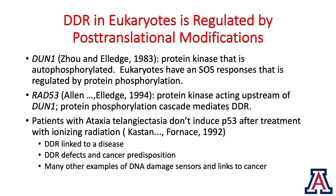Later on, Elledge went on to show that DUN1 is a protein kinase that's autophosphorylated, and that eukaryotes have SOS responses regulated by protein phosphorylation — so now we're talking about post-translational modification, not just transcription. Ten years later, RAD53 is discovered as the protein kinase acting upstream of DUN1, so a protein phosphorylation cascade mediates the DNA damage response. Then Kastan et al., with many famous people on the paper, showed that patients with ataxia-telangiectasia don't induce P53 after treatment with ionizing radiation — the DNA damage response is now linked to a disease and cancer predisposition syndrome.